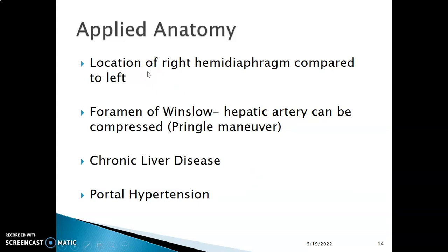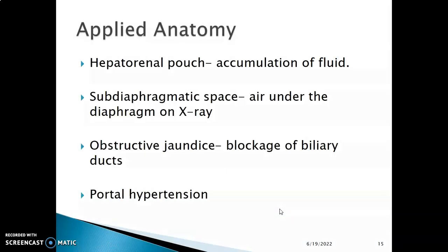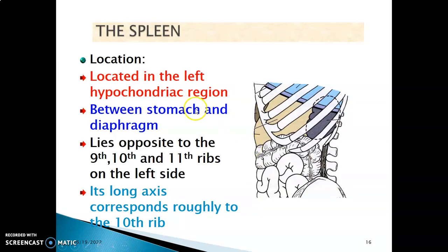For applied anatomy: the liver is on the right side of the abdomen, which causes the right hemidiaphragm to appear higher than the left on imaging. There is also the foramen of Winslow, which is the opening to the lesser omentum — this is where the hepatic artery can be compressed, known as Pringle's maneuver. Chronic liver disease conditions such as cirrhosis cause fibrosis, leading to high pressure within the portal vein — portal hypertension — characterized by varices at portosystemic anastomoses, including esophageal varices at the lower esophagus. In the next lecture, we'll discuss the spleen.